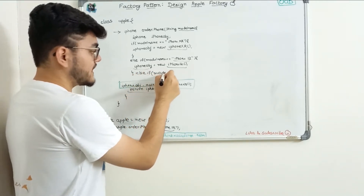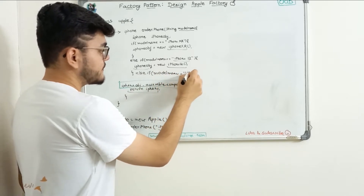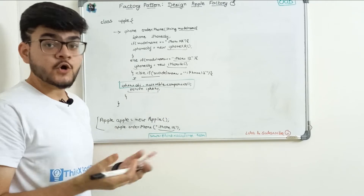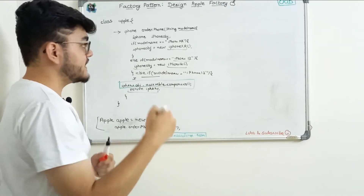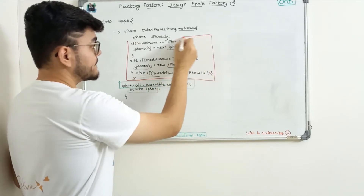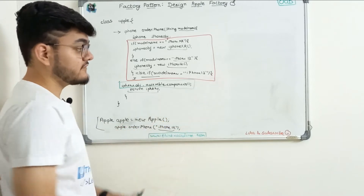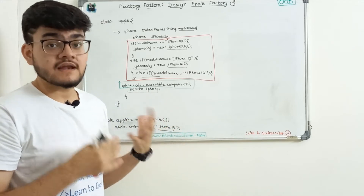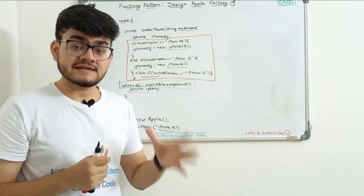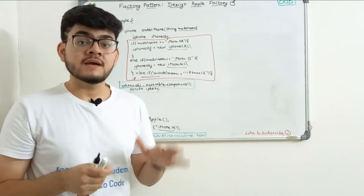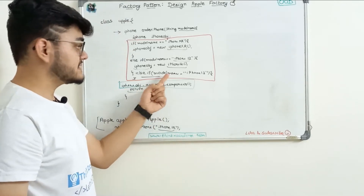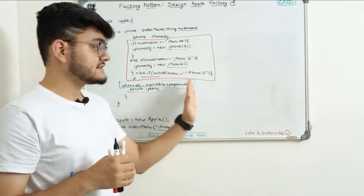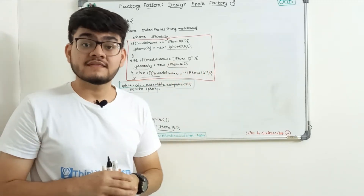At this point you must have realized that the red section — the if/else-if code — is actually changing according to client needs. If I have a different iPhone, I need to modify this code. This means the Apple class is getting modified, and which principle says a class should be closed for modification? The Open-Close Principle of the SOLID principles states that once you have created a class, it should be closed for modification but open for extension. We need to find a way to create a separate class that handles object creation.